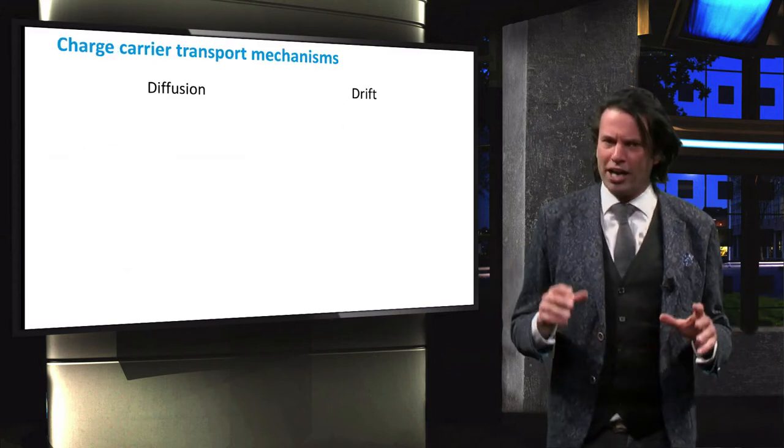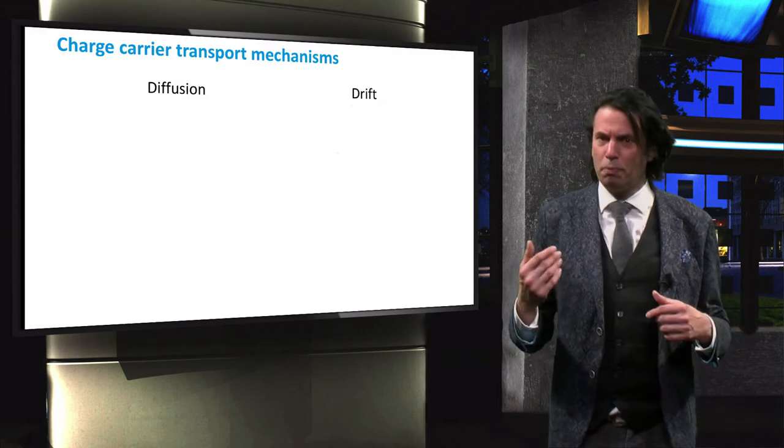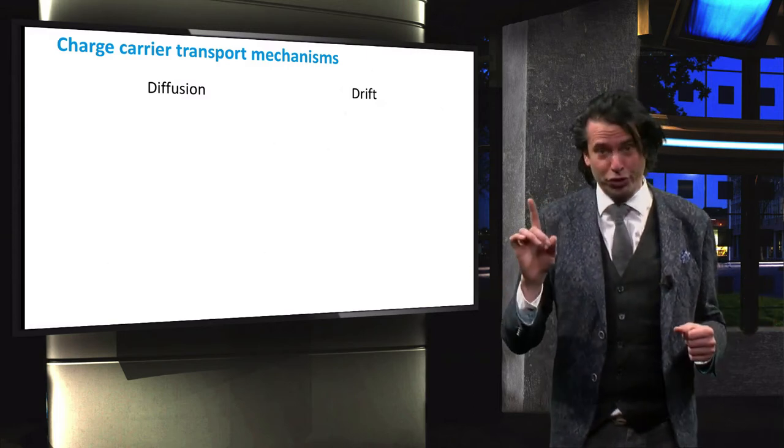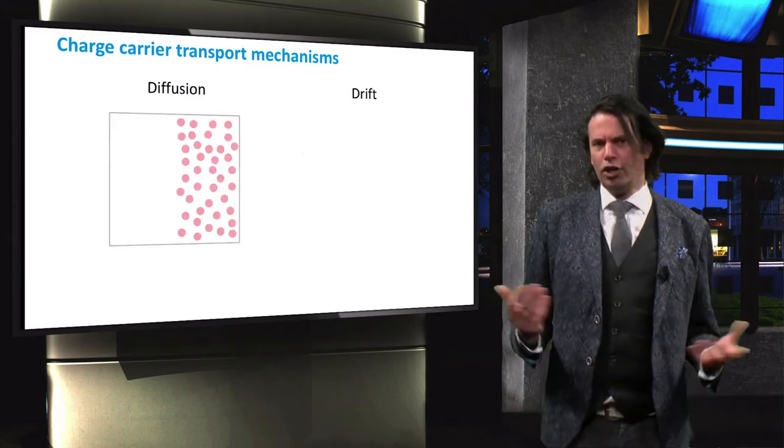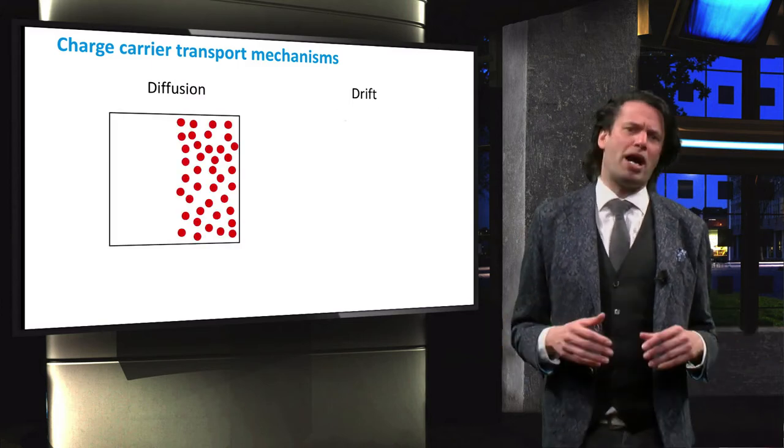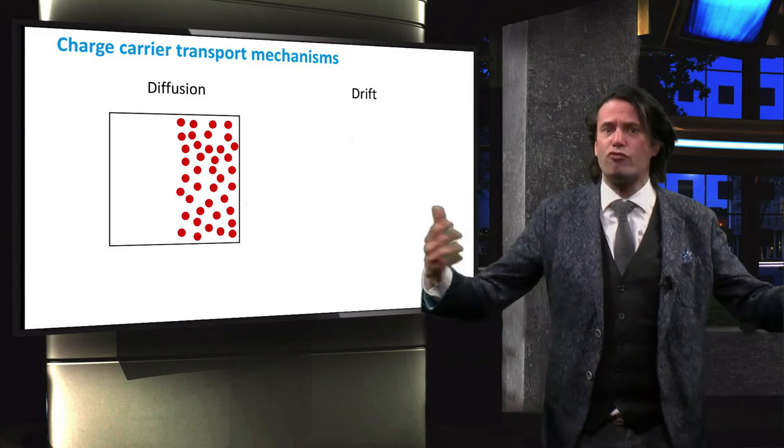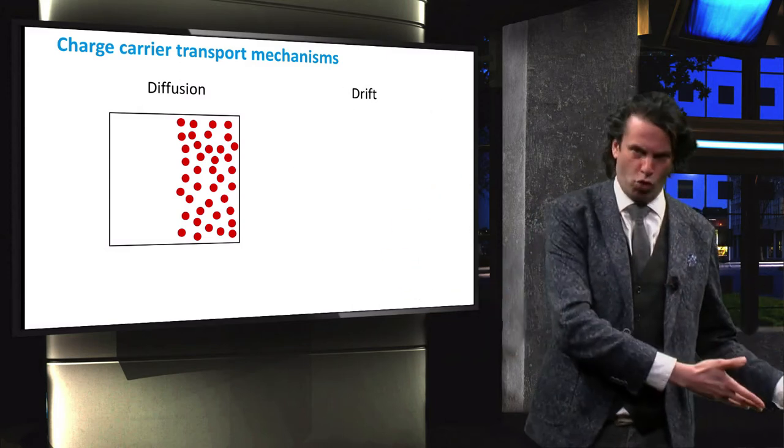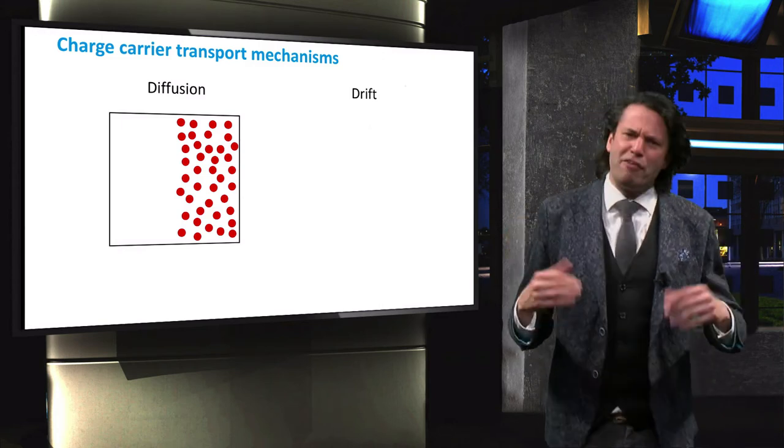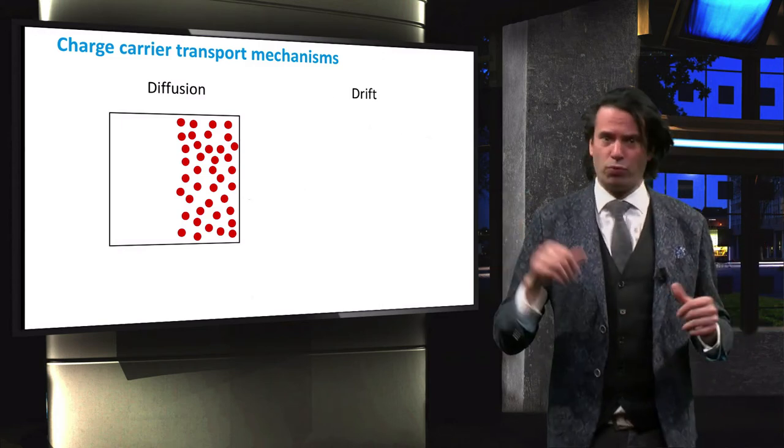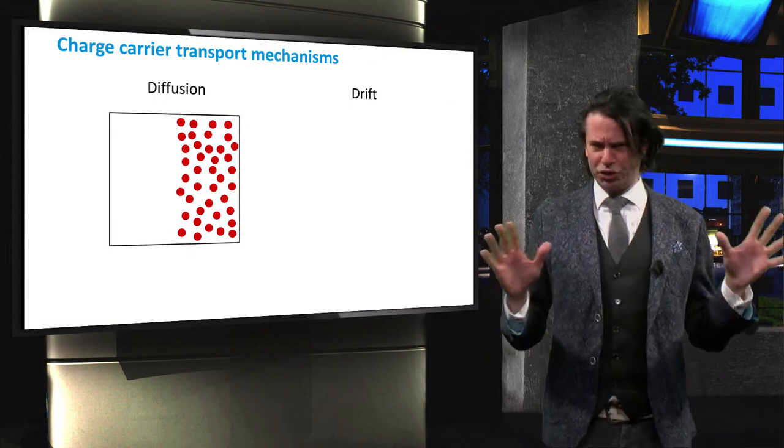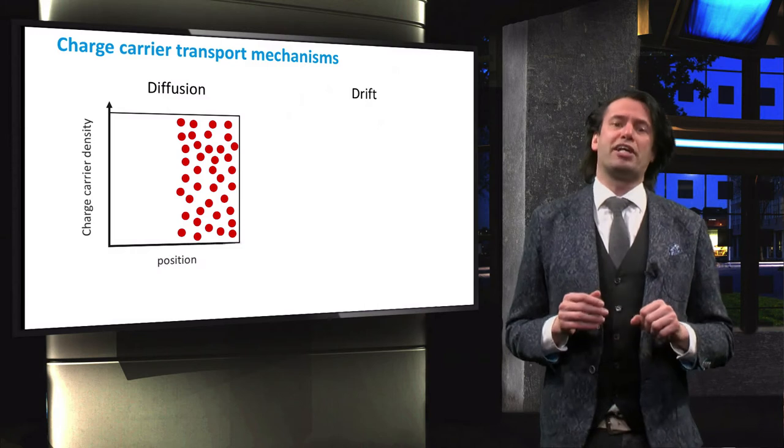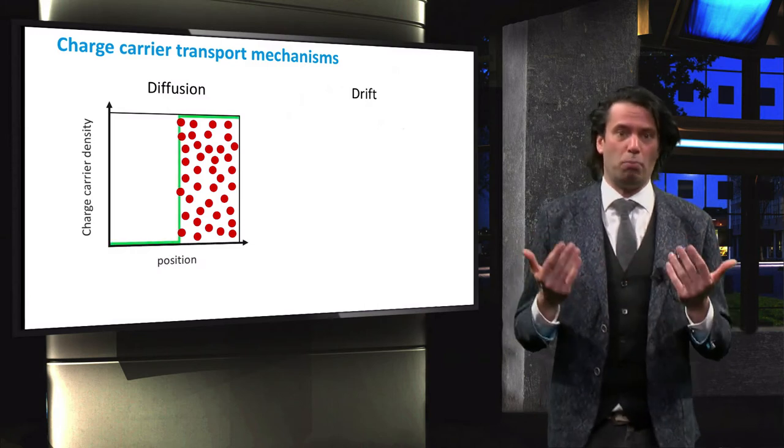We will start our discussion by recollecting the two mechanisms for charge carrier transport in solar cells: diffusion and drift. Diffusion is a process whereby particles tend to spread out from regions of high particle concentration into regions of low particle concentration. So if we have a cross-section like the one shown here, with all the charge carriers concentrated on one side, the charge carrier density profile will resemble a block diagram.